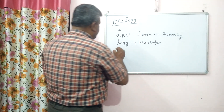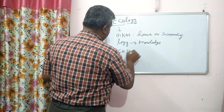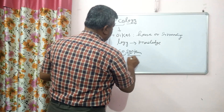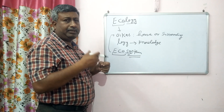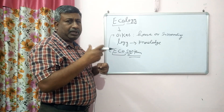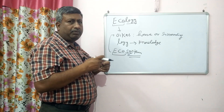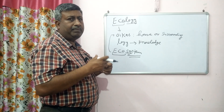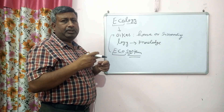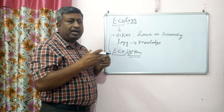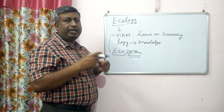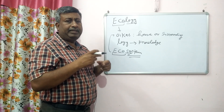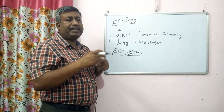Similarly, ECO system — if we use the term ECO system, ECO means the same oikos, that is the house, and system is the interrelated, interlinked process into a functional unity. When things are interlinked or interrelated, that makes a system. In a system, one thing acts as an input and output acts as an input, so there are interrelated processes to make a unit functional. When surroundings are interrelated and interlinked, then it makes a system.